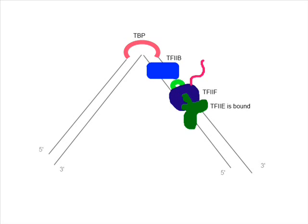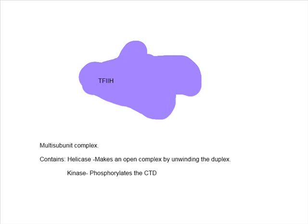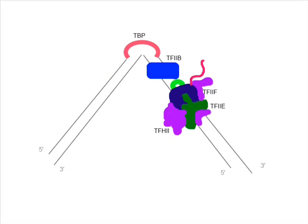Lastly, TF2H binds. TF2H is a multi-subunit complex that contains a helicase and kinase. Helicase unwinds and forms an open complex. Kinase plays a role in the phosphorylation of the C-terminal domain.